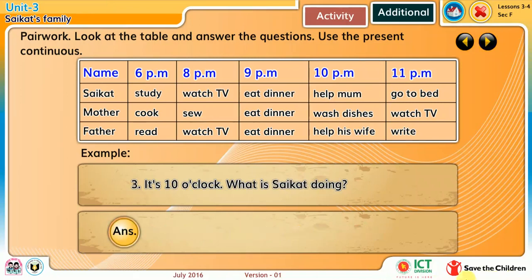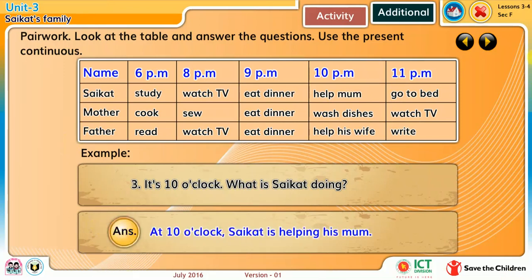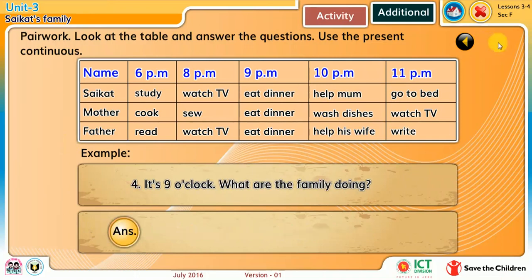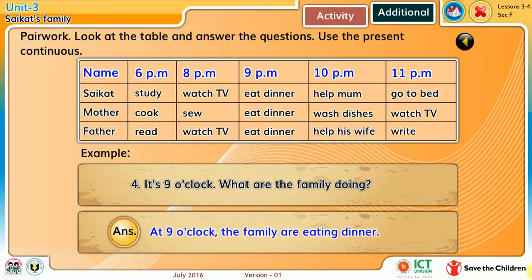Question 3: It's ten o'clock. What is Shurikot doing? At ten o'clock, Shurikot is helping his mom. Question 4: It's nine o'clock. What are the family doing? At nine o'clock, the family are eating dinner.